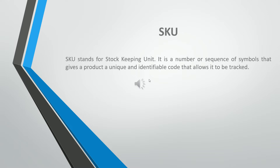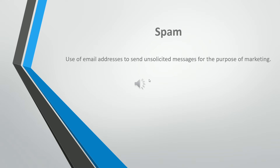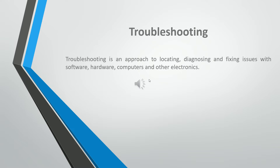SKU stands for Stock Keeping Unit. It is a number or sequence of symbols that gives a product a unique and identifiable code that allows it to be tracked. Spam is the use of email addresses to send unsolicited messages for the purpose of marketing. Troubleshooting is an approach to locating, diagnosing, and fixing issues with software, hardware, computers, and other electronics.